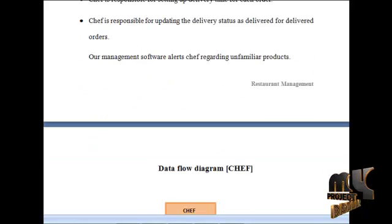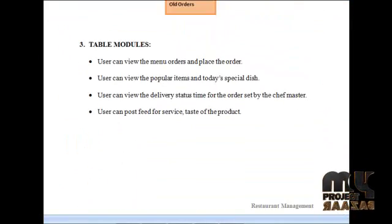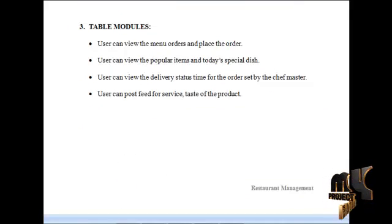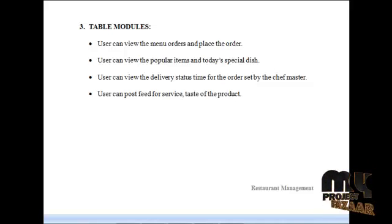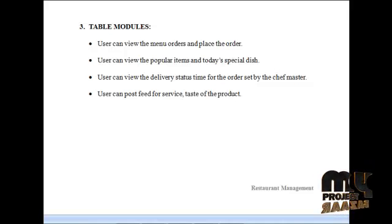The data flow diagram for the chef module is shown. The next module is the table module. The table user can log in to our site and view the menu, and place orders. The table user can view the popular items and today's special dishes, and can view the delivery status and time for the order set by the chef master.